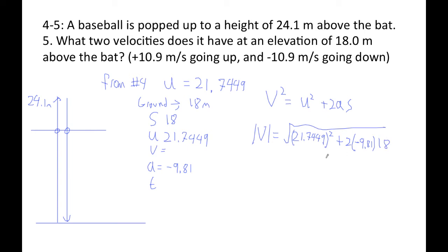So now I'm going to plug this guy into my calculator here. Let's see. Square root, left parenthesis. And I'm actually just typing the letter u squared, right? And then I go plus 2 times negative 9.81 times 18. Right parenthesis, enter.